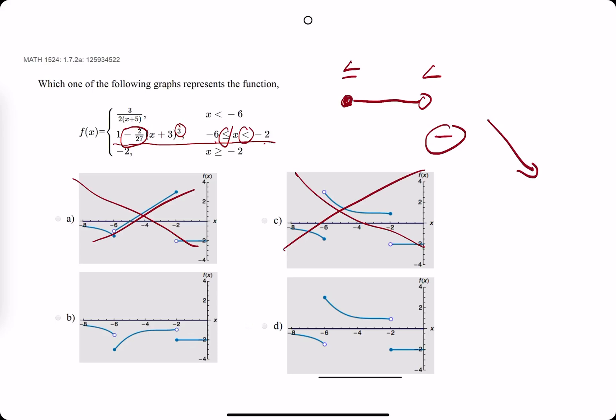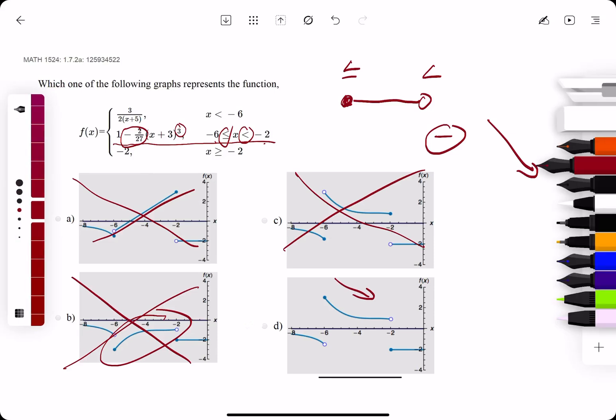So, a decreasing middle piece means we would eliminate B because it's increasing, while choosing D because it's decreasing based on the negative 2 over 27. Bring out the eraser and find out that D is the correct answer.